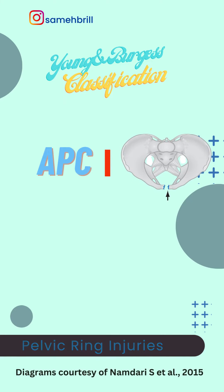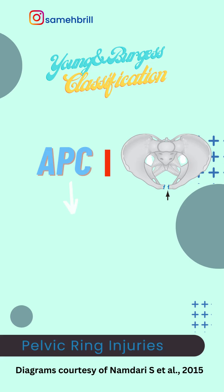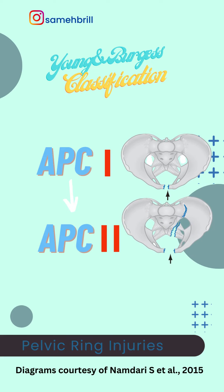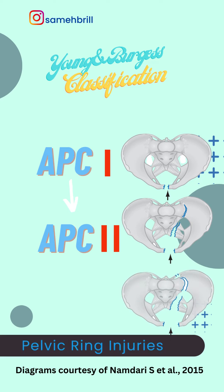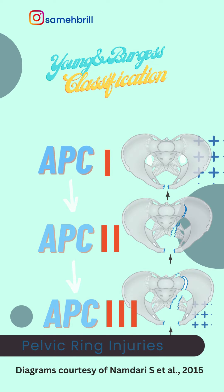In APC1, there is always a symphysial ligament injury or longitudinal pubic rami fracture, which might progress into injury of the sacrospinous, sacrotuberous, and anterior sacroiliac ligaments. And finally, if the forces of the trauma cause injuries of the posterior sacroiliac ligaments, this will be called APC3.